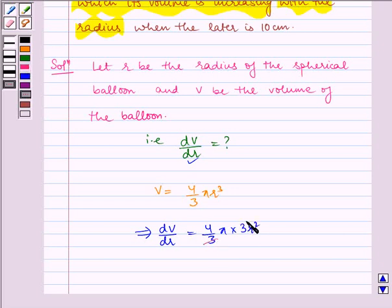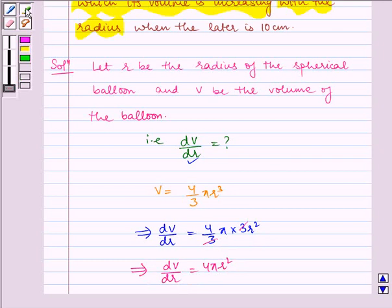3 and 3 gets cancelled. So we are left with dV by dr is equal to 4 pi r square. Now we have to find dV by dr when radius is equal to 10 cm.